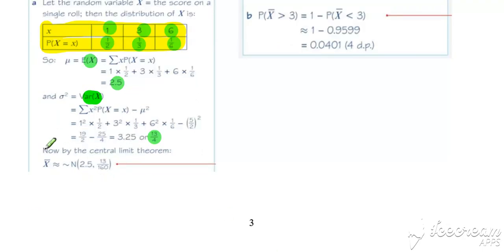And this is now where our central limit theorem comes into play. Note a couple of things. Note that the original distribution that we're starting with for x wasn't normally distributed. Note the sample size is about 40, so it's bigger than the ballpark requirement of 30.